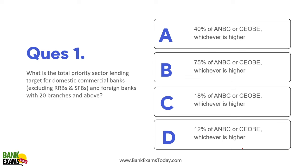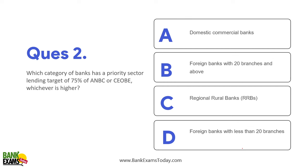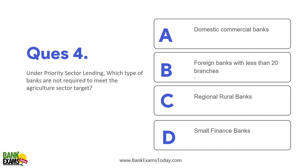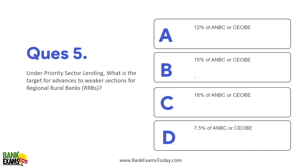MCQ: What is the total priority sector lending target for domestic commercial banks and foreign banks with 20 or more branches? Answer: 40% of ANBC or CEOBE, whichever is higher. Which category of bank has a PSL target of 75%? Answer: RRBs and small finance banks. Under PSL, what is the specific target for lending to small and marginal farmers? Answer: 10% within the agriculture sector for domestic commercial banks. Which banks are not required to meet the agriculture sector target? Answer: Foreign banks with fewer than 20 branches. What is the target for advances to weaker sections for RRBs? Answer: 15% of ANBC.